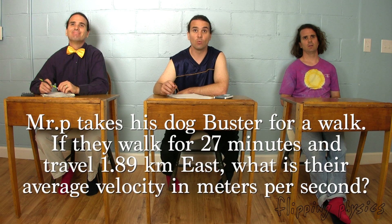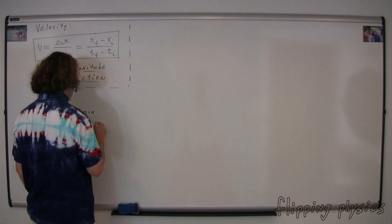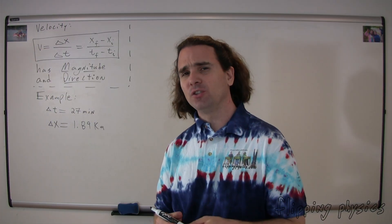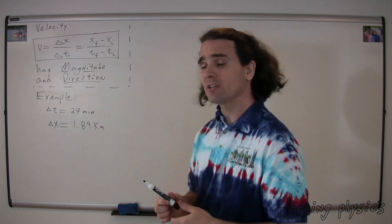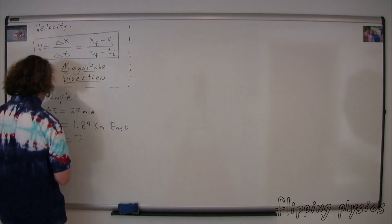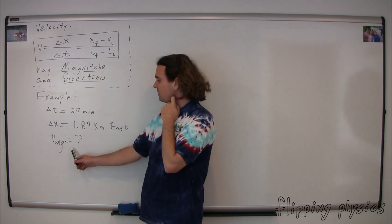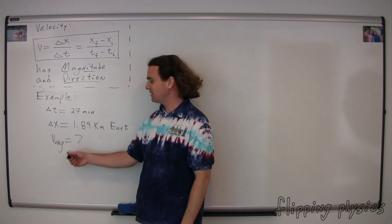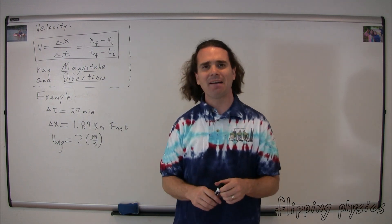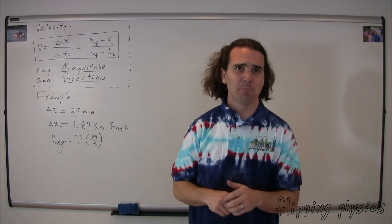Bobby, please continue. And travels 1.89 kilometers east — please stop. Bo, what variable equals 1.89 kilometers? Displacement. No. Distance. No, it's displacement. Displacement. Bo, I do agree it should be displacement. However, the way I've written it on the board is actually just distance. Bobby, could you please fix it? You need to give it a direction. So just add an east — 1.89 kilometers east. Bobby, please continue. What is their average velocity in meters per second? So then I write v sub avg is equal to question mark, so that we have the average velocity is equal to question mark, illustrating what we're trying to find. I also write meters per second parenthetically after the question mark to illustrate that we're looking for the average velocity in meters per second.